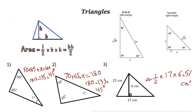We also have two special right triangles. The first is the isosceles right triangle. It has a 90-degree angle, and the two legs are equal. To find the hypotenuse, multiply one leg by the square root of 2. For example, if one leg is 4, then the other leg is also 4, and the hypotenuse is 4 root 2.